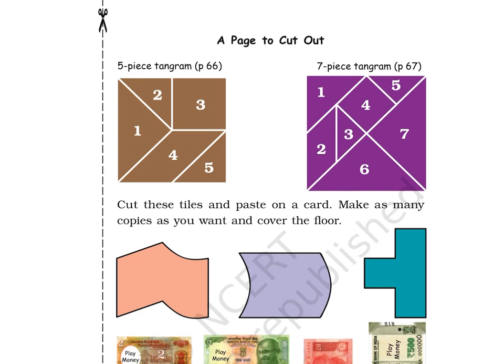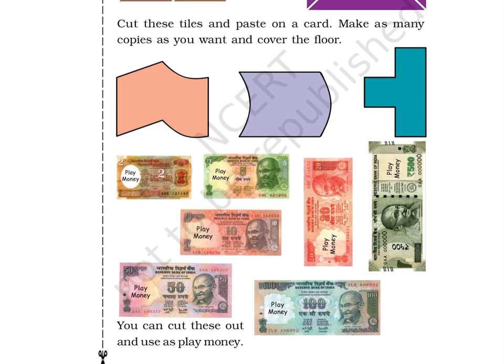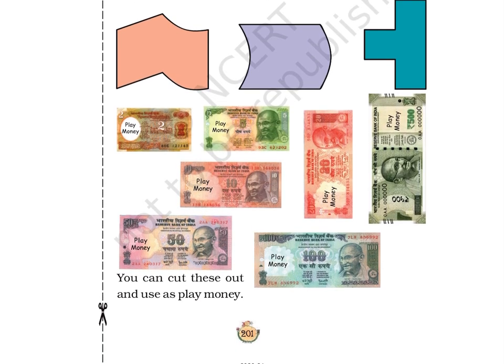Cut these tiles and paste on a card; make as many copies as you want. Pictures of rupees notes are given: 2 rupees, 5 rupees, 10 rupees, 20 rupees, 50 rupees, 100 rupees, and 500 rupees. You can cut these out and use as play money. This concludes Chapter 14, Rupees and Paise, Part 3, of the total 14 chapters of this book.